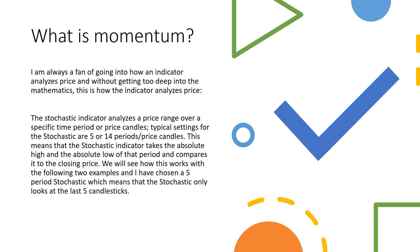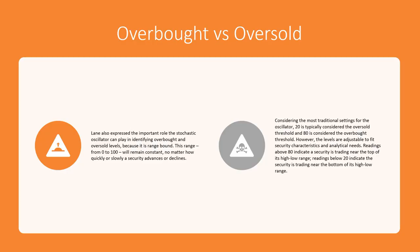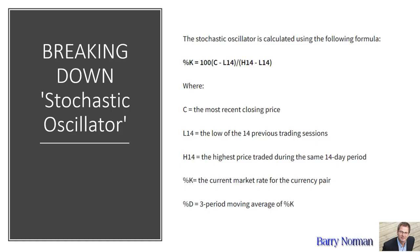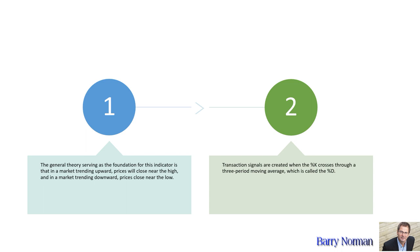We look back over 14 periods, take the highest and lowest prices in those 14 periods, and compare them to the current close. The mathematical calculation is: percent K equals 100 times the current close minus the lowest point in the 14 previous sessions, divided by the highest point minus the lowest point in those 14 sessions. Transaction signals are created when the percent K crosses through the three-period moving average, which is called the percent D.